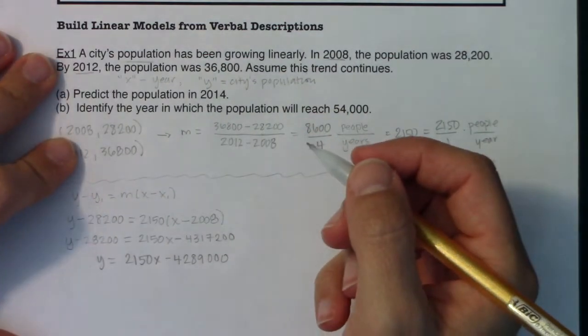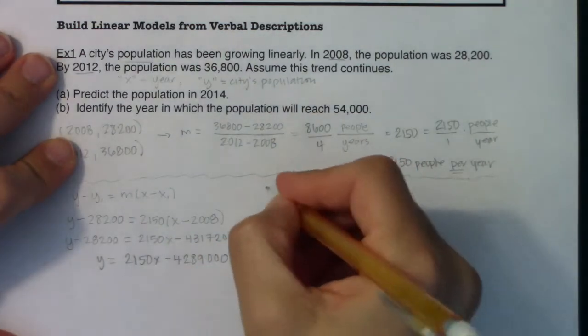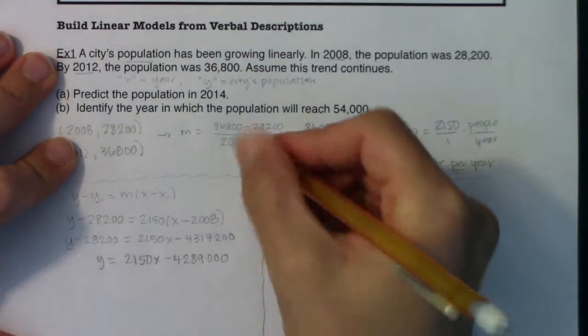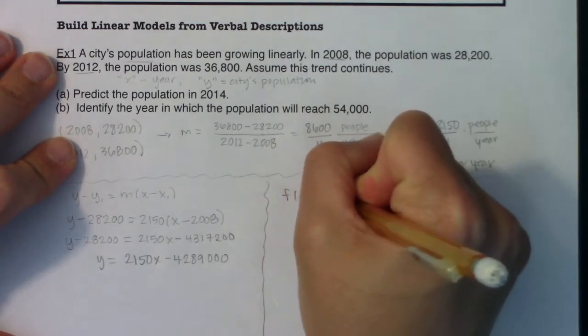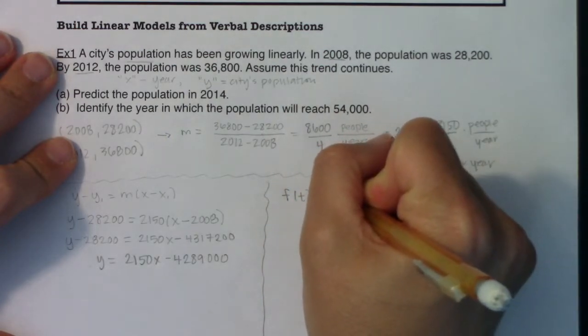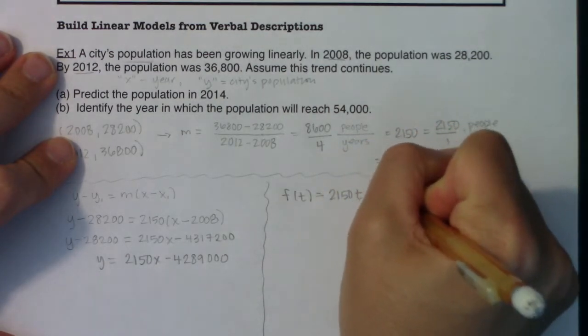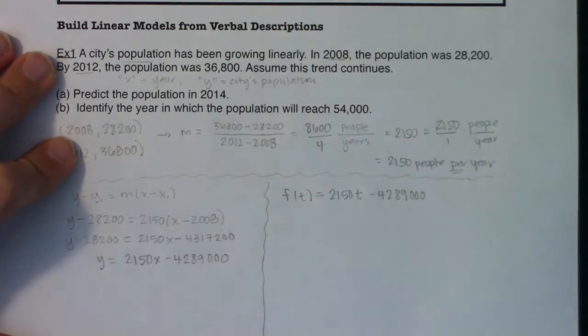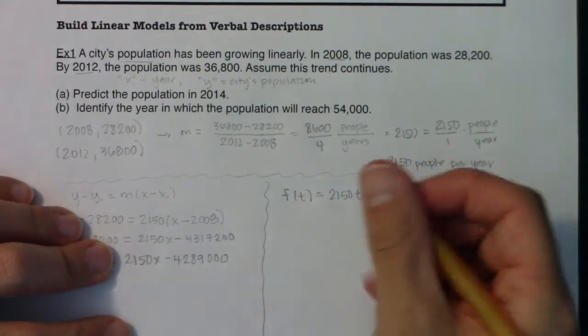So with that, let's try and answer part A. And actually before I do that, just because I'll answer part A, but I'm going to write this up in function notation just so we can practice. So let's write this as f(t) = 2150t minus 4,289,000. You don't have to do that. I just felt like it because it's a crazy Saturday night here in the Abreu household.